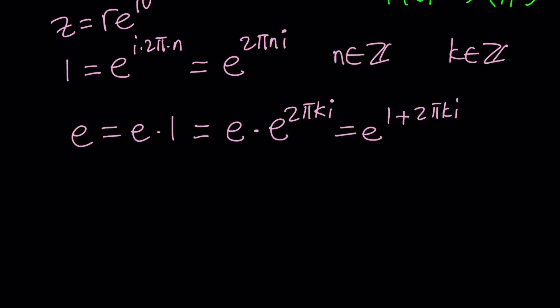Let's replace 1 with e to the power 2 pi n i, and then raise it to the power x. This is where the variable x comes in. We're going to set it equal to e, which is e to the power 1 plus 2 pi k i. Notice that we're not raising both sides to the power x. We're just substituting. We had 1 to the x equals e, and we replace 1 with that.